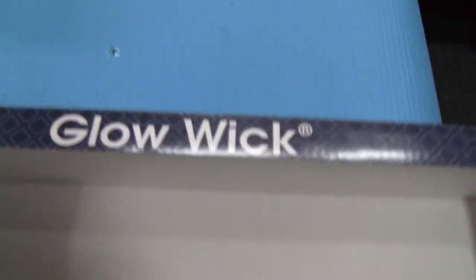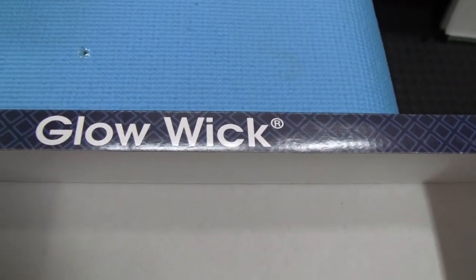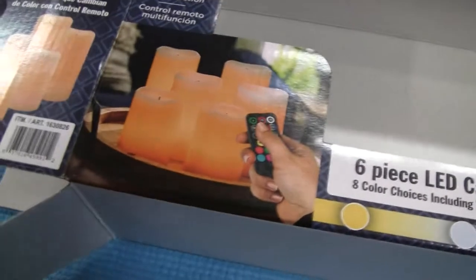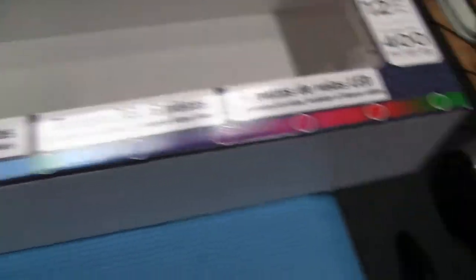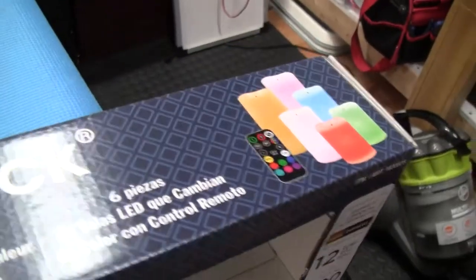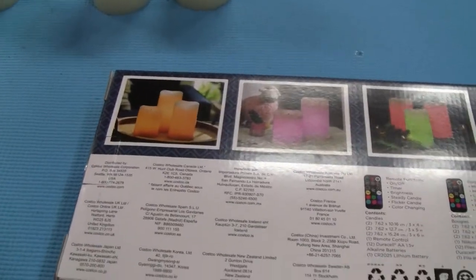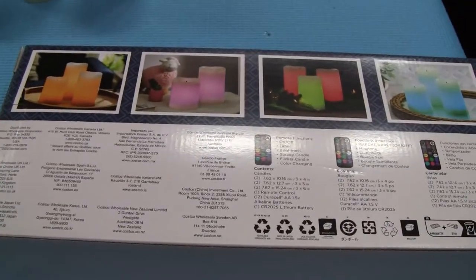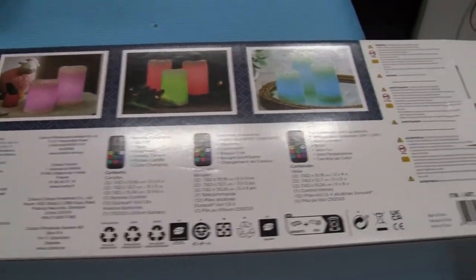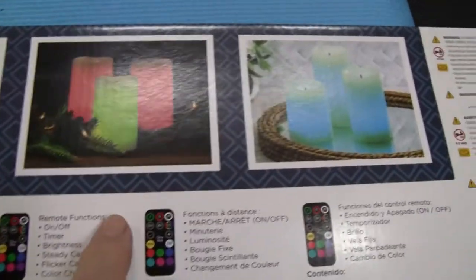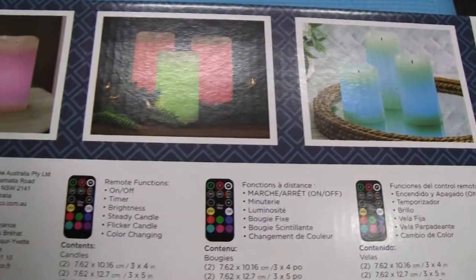I got this GlowWick and I got it at Costco. This is my second set that I bought, and this one is the upgraded version. The other one I have is just regular colors, and this one is really sharp. You can make endless centerpieces with it that light up. It's on a timer.